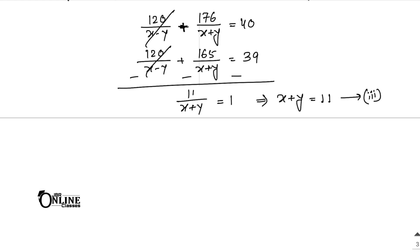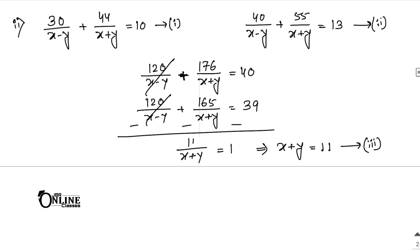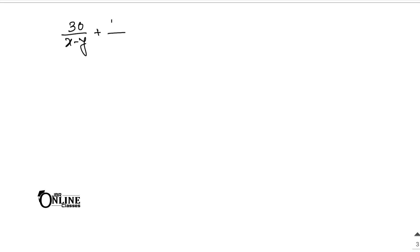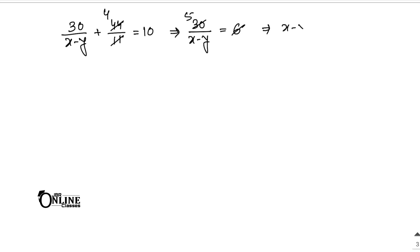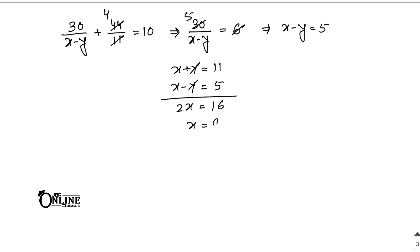To find x minus y, substitute x plus y equals 11 into the first equation: 30/(x minus y) plus 44/11 equals 10, so 30/(x minus y) equals 10 minus 4 equals 6, giving x minus y equals 5. Now solving x plus y equals 11 and x minus y equals 5 simultaneously: 2x equals 16, so x equals 8, and y equals 3.